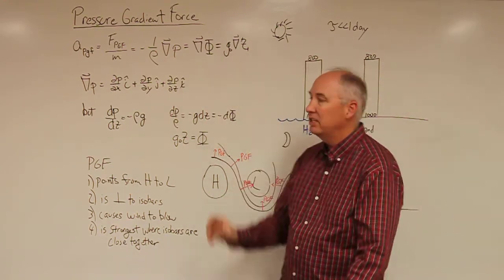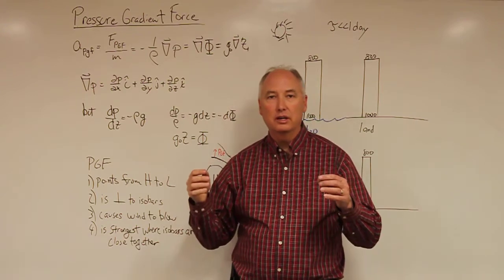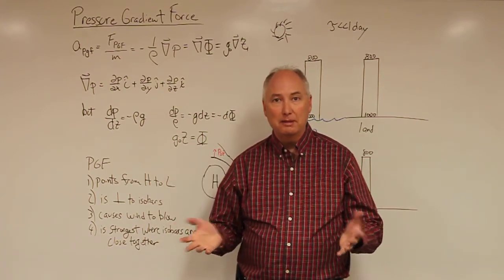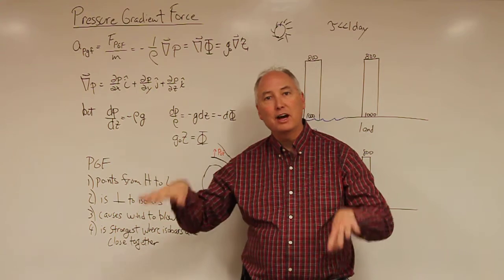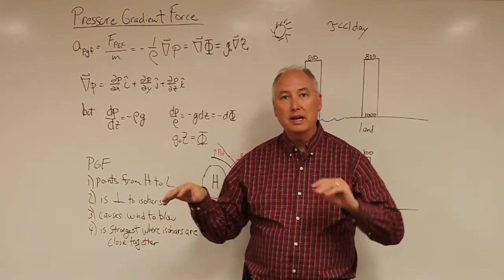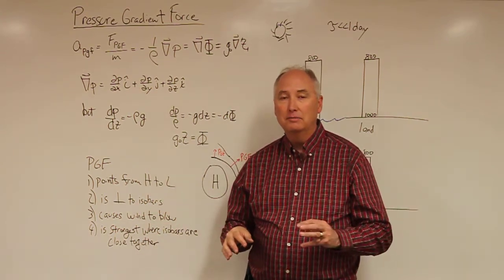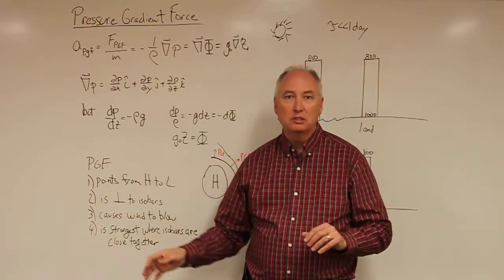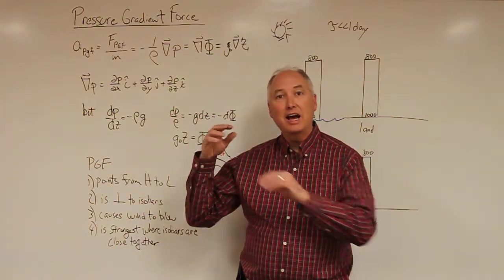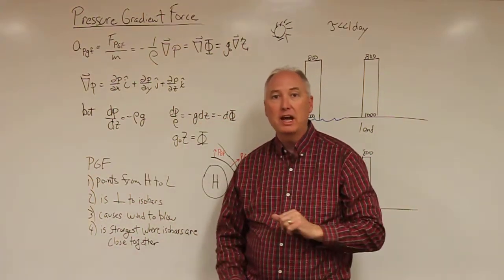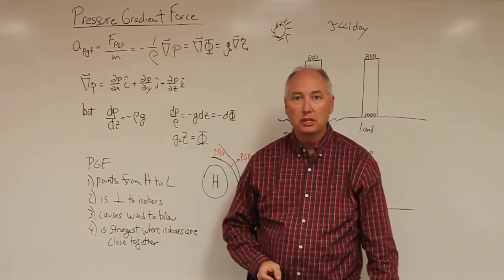The geopotential height is typically what we use on constant pressure maps. So for example, a 500 millibar map, you'll have highs and lows on that. What those highs and lows actually are, since everything on that map is a constant pressure, is a high in terms of the geopotential height or a low in terms of the geopotential height.